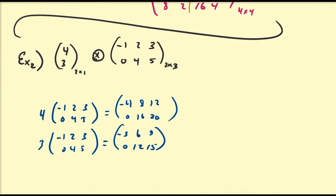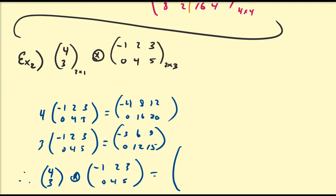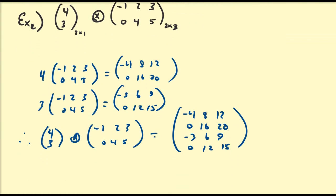So the Kronecker product of [4, 3] with [−1, 2, 3, 0, 4, 5] is the larger matrix: [−4, 8, 12, 0, 16, 20, −3, 6, 9, 0, 12, 15], which is a 4×3 matrix.